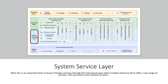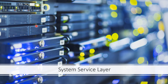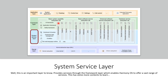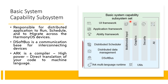The next layer is the system service layer, which is a very important layer. It provides services through the framework layer, and through that the Harmony OS is capable of offering a vast range of services. The system service layer has four parts: basic system capability subsystem set, basic software service subsystem set, enhanced software service subsystem set, and hardware service subsystem set.